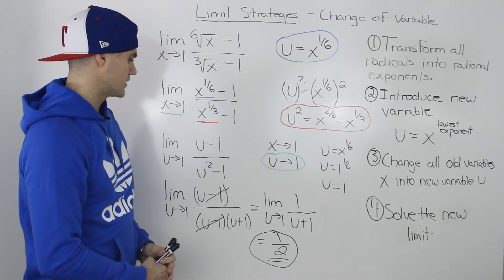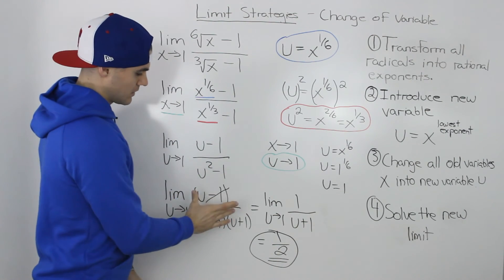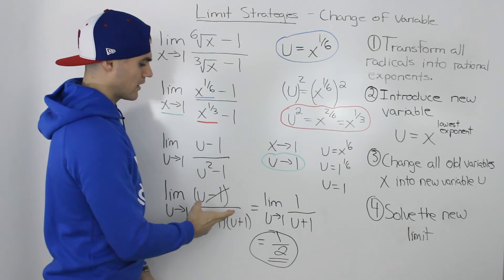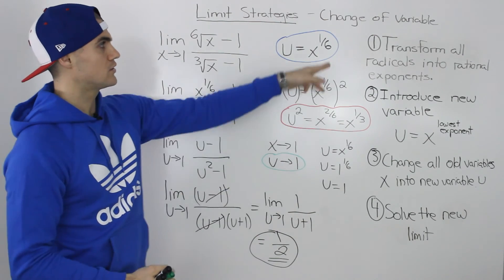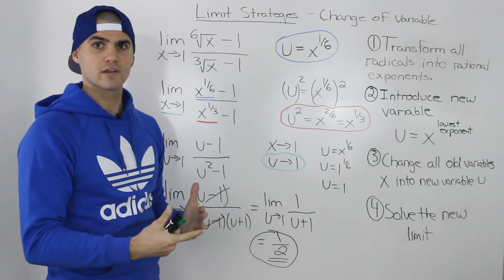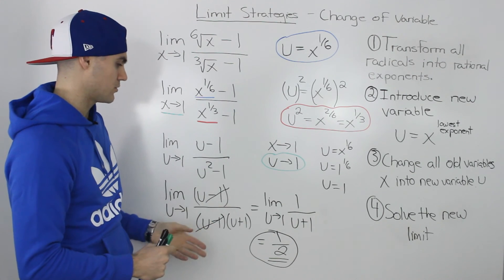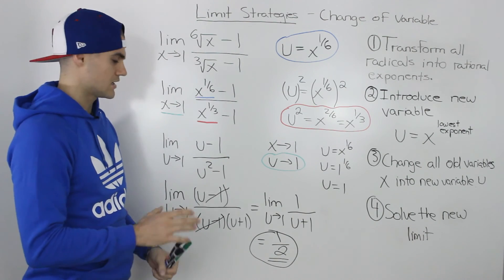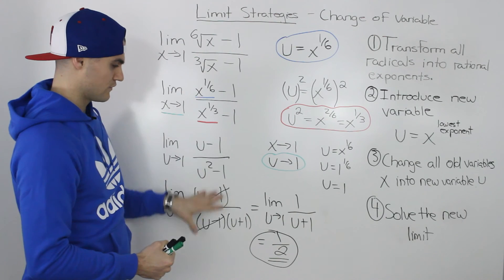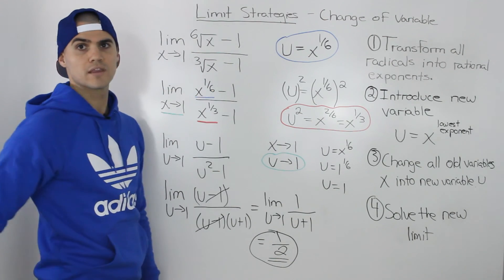One final point worth mentioning: in this example we used a difference of squares for the factoring. In most change of variable problems you'll typically be factoring a sum or difference of cubes, but here it was a difference of squares. Just be aware that it's not always cubes — either way, the factoring was smooth and we get the final answer of one half.